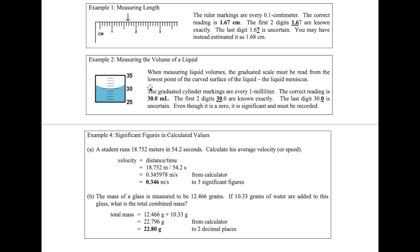When measuring the volume of a liquid, it forms a concave shape in a glass measuring device. The lowest point of that shape is called the meniscus, and that's where we read the volume — not at the higher edges. We follow the same steps: identify the numbers visible (25, 30, 35), count 5 marks over 5 milliliters, so each mark equals 1 milliliter.